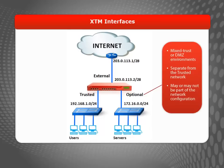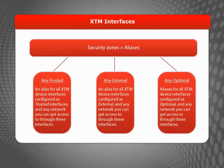Optional interfaces are often used as mixed trust or DMZ environments that are separate from your trusted network, and you may or may not choose to use them. Resources typically found on an optional interface include public web servers, email servers, and FTP servers, all of which you want to protect. The name of each interface also acts as an alias you can use to define your firewall policies, including for example 'any trusted', an alias for all networks behind the trusted interface.